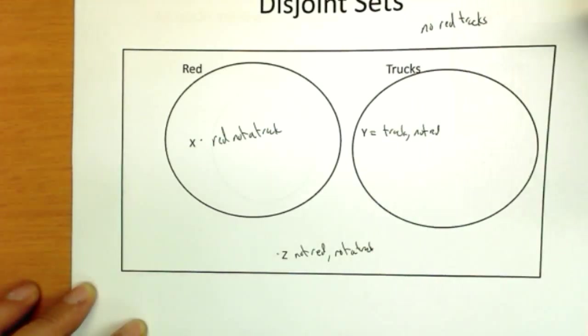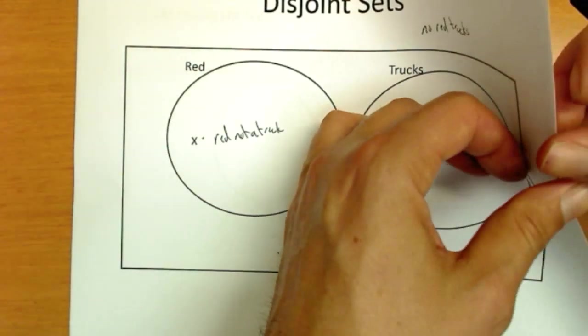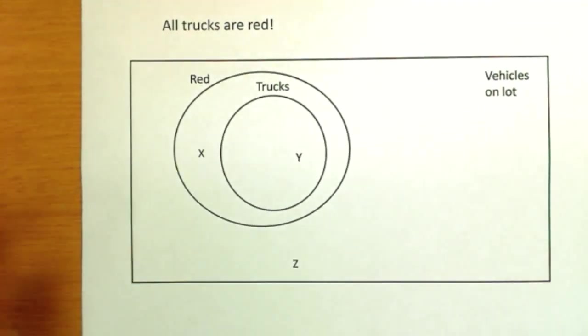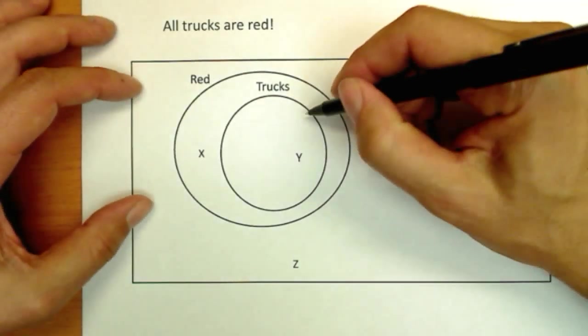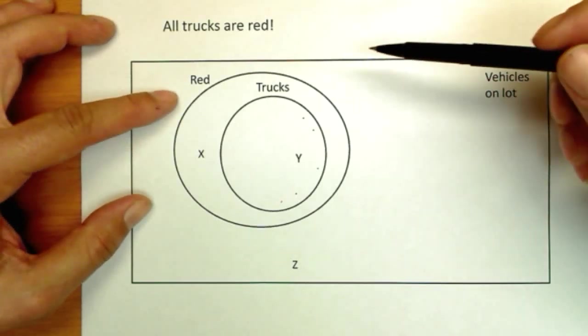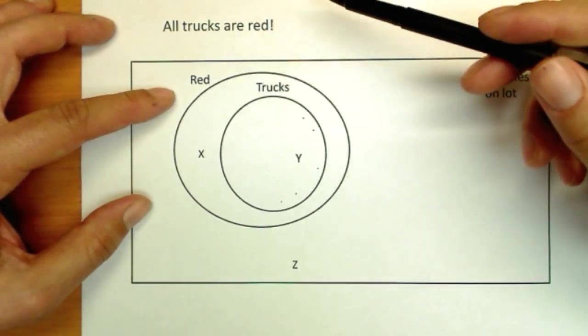Here's a third possibility for our dealership. And so what do we see this time? The circle for trucks is completely contained in the circle for red. So no matter where you could pick a truck out of this circle, it is clearly going to be inside the red circle. So all of the trucks are red.